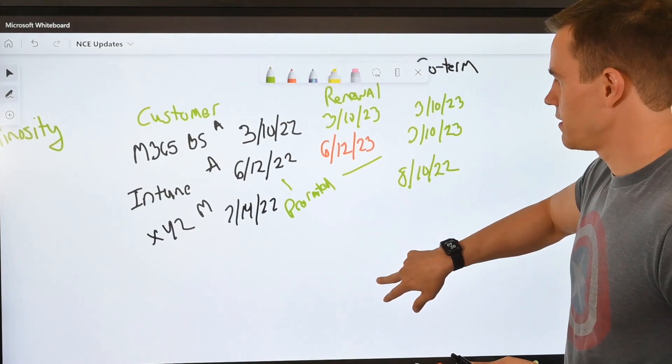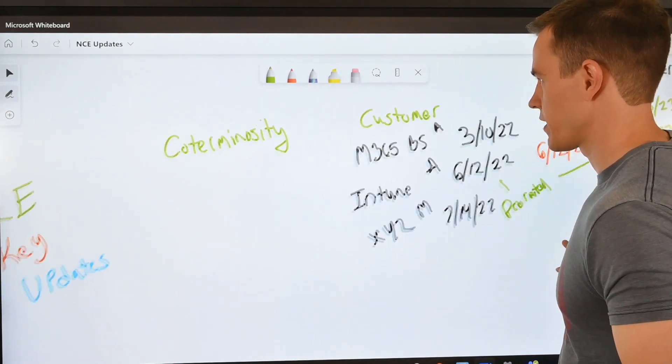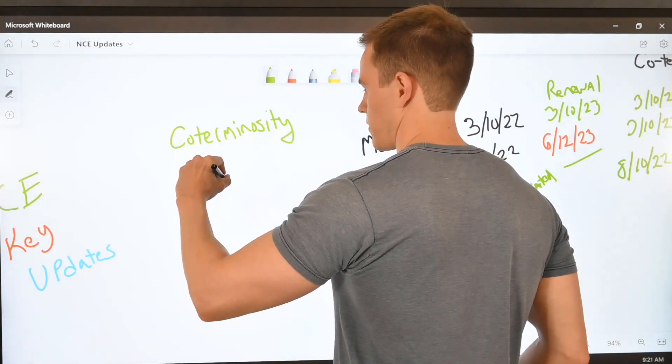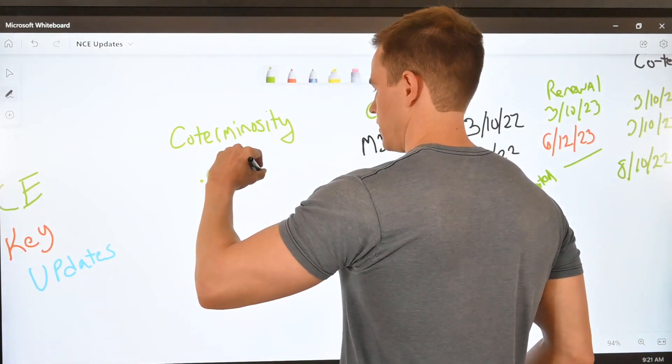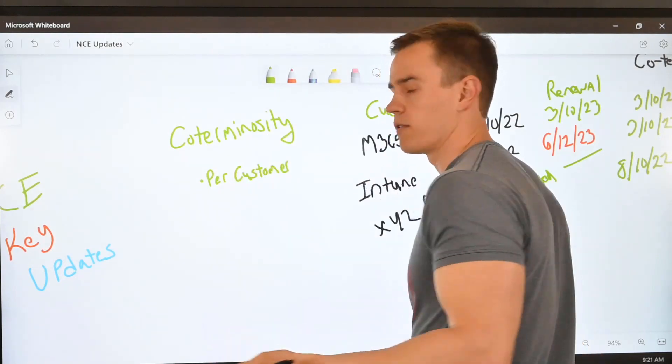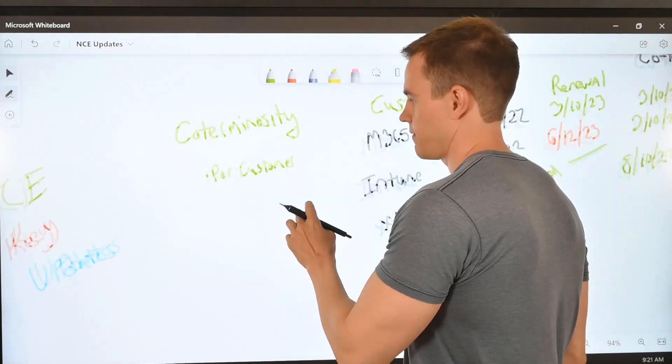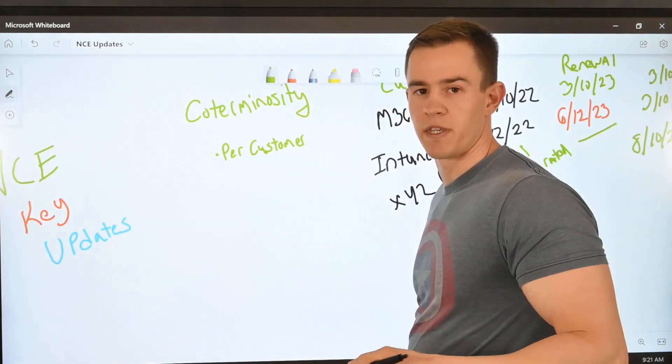So all of this is really great—it reduces operational complexity. As far as some asterisks go, this is still just per customer, meaning we can't have one renewal date across all of our customers that we have under management. And that kind of makes sense just based off of the way things are provisioned within these tenants.